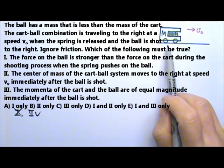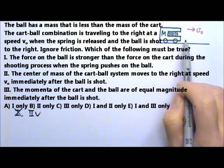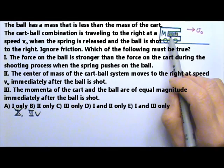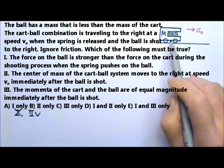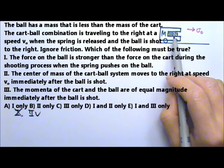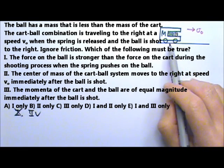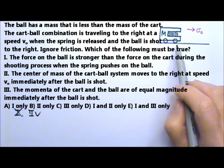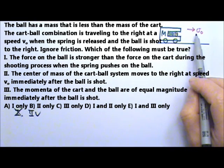Because if we ignore friction, then the net force on the whole system is zero. That means the center of mass of the whole system should be moving at the constant velocity. So before, during, and after the ball is shot, the whole system, the center of mass, should be moving at that same velocity v₀ to the right.